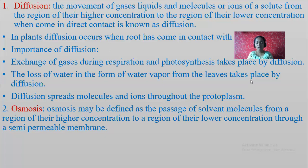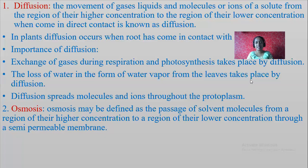When sunlight is more, water will be lost in the form of water vapor. How does transpiration take place? Through the process of diffusion — movement of water molecules from the region of higher to lower concentration. Diffusion also spreads molecules and ions throughout the protoplasm; exchange of gases and other materials takes place within the plant body through the process of diffusion.